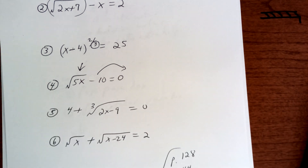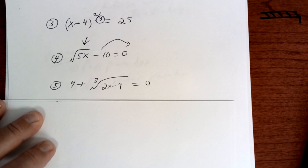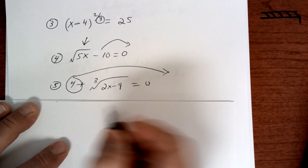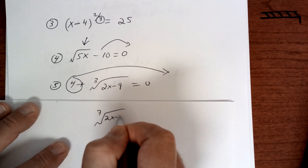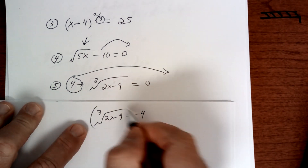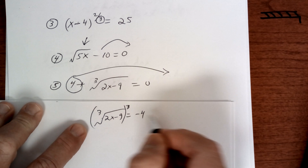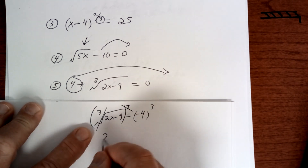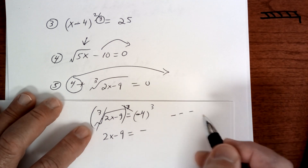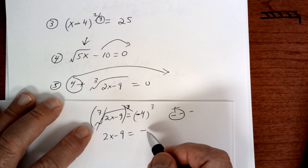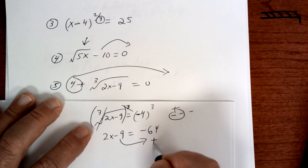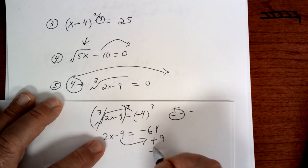This one right here is the cube root, so copy that down. I would isolate it — I'd move the 4 over here. So I'm going to have the cube root, and that's a negative 4. Since it's the cube root, we want to cube it. And when you cube it, you're going to get 2x minus 9 equals a negative — right, three negatives: negative, negative, negative — so you end up with a negative. 4 times 4 is 16 times 4, I think it's 64. Then solve: move this over, add 9, and then divide by 2.